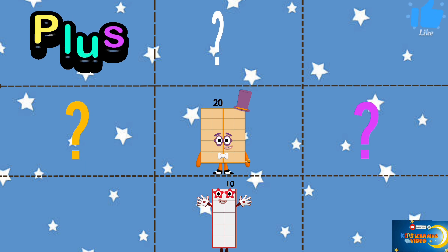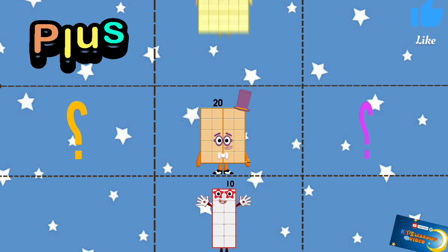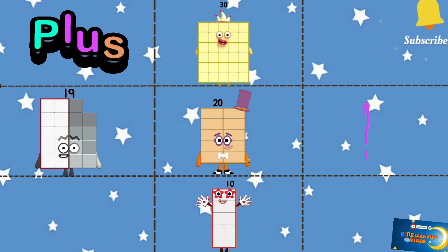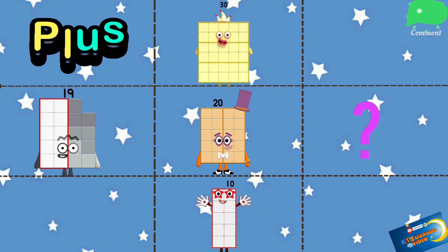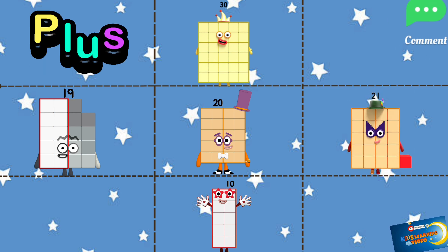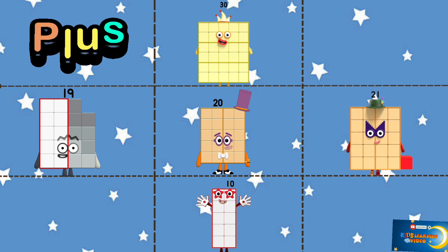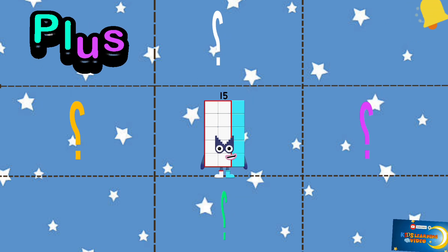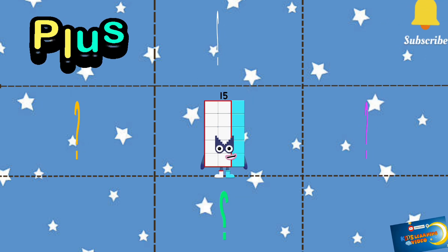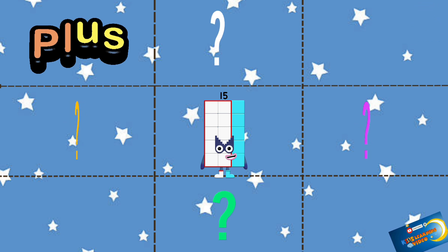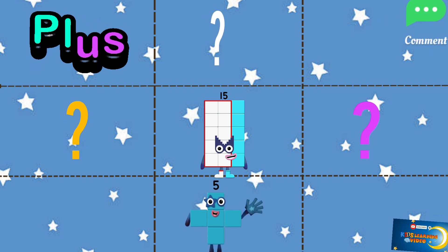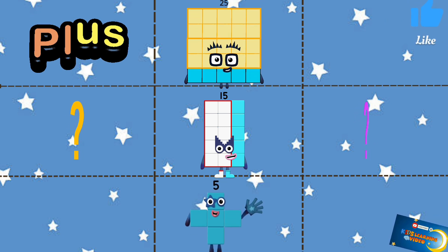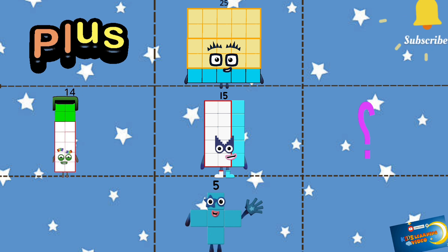Low ten, upper thirty, left ninety, right twenty-one, one fifteen. Five low, twenty-five upper.